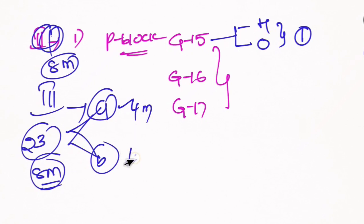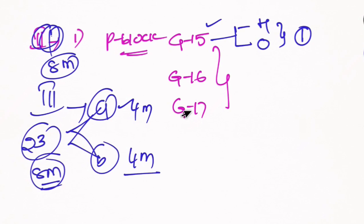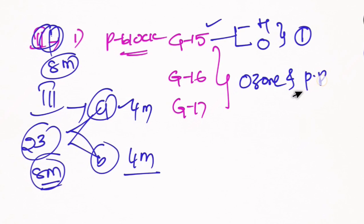23A and 23B are 4 marks each. 23A covers Group 15, and 23B covers Group 16. Ozone preparation and ozone chemical properties are important questions worth marks in this section.